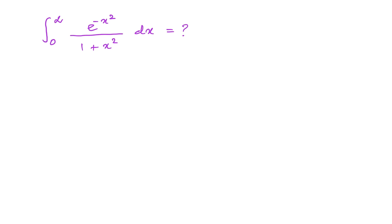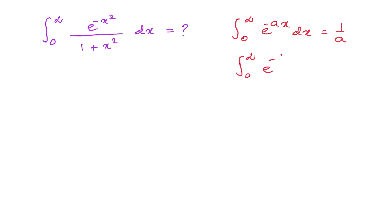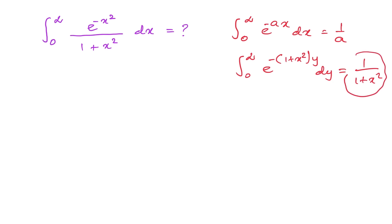To solve this integral, I am going to consider the auxiliary integral from 0 to infinity of e to the minus ax dx. We know this is equal to 1 over a — a simple integral. Similarly, we can write the integral from 0 to infinity of e to the minus (1 plus x squared) times y dy equals 1 over (1 plus x squared).